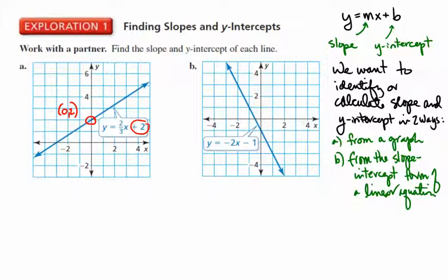Next, how do we calculate slope? We can start from the y-intercept and then go up 2 over 3. So our slope is m equals positive 2 over 3. We can see that in the equation as the number that's multiplied times x. So the slope from the equation point of view is the number multiplied times x.